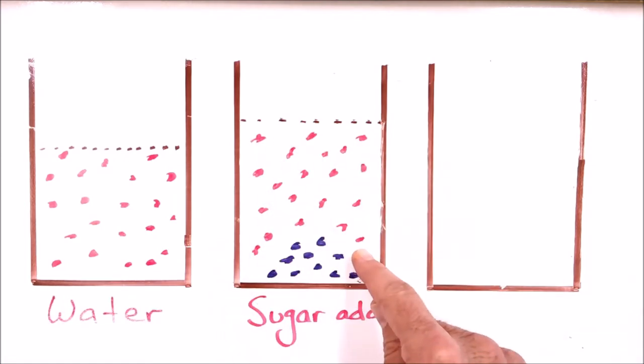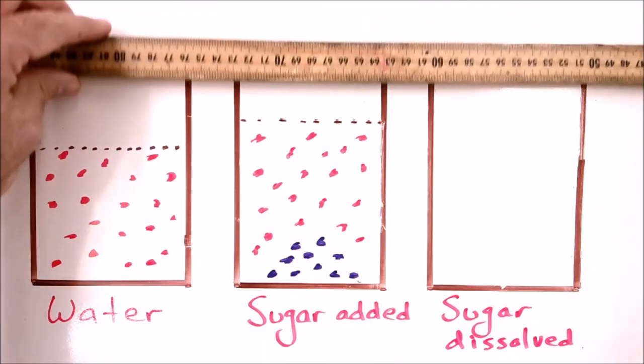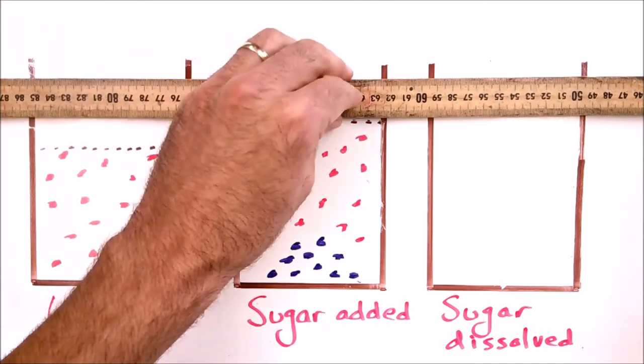Next, we stirred the mixture and helped the sugar dissolve. From our observations, we noticed that the level of the liquid remained the same compared with the previous diagram. We'll show that carefully here.